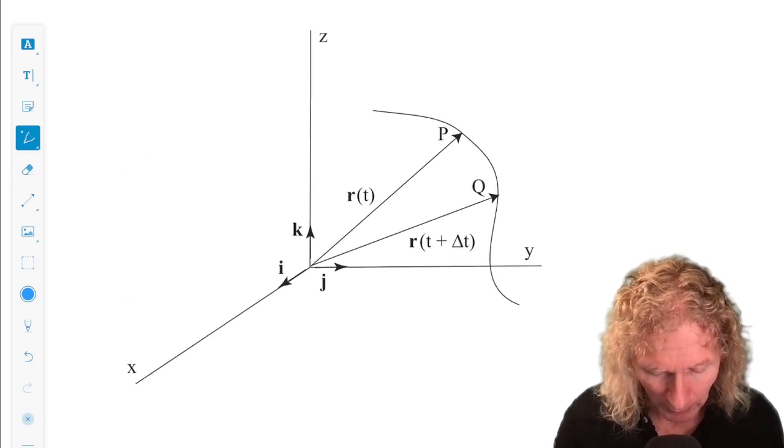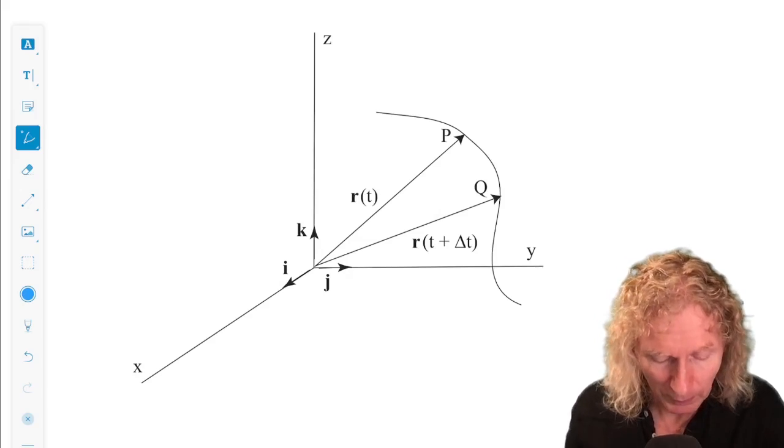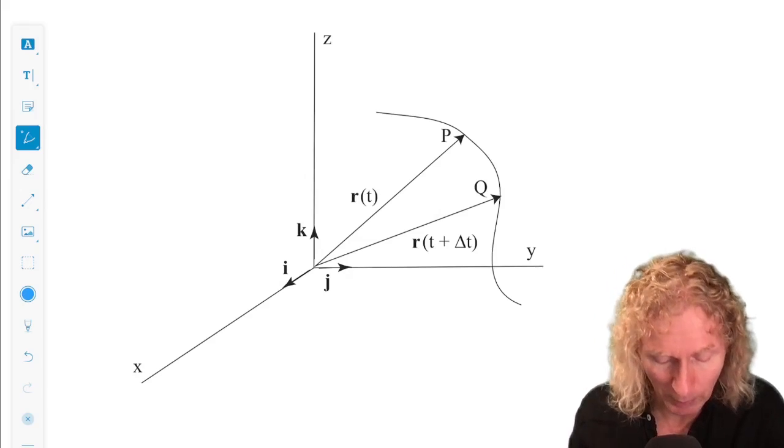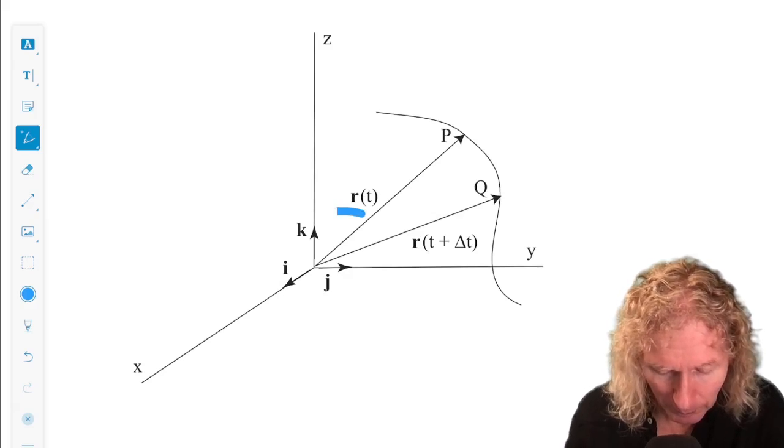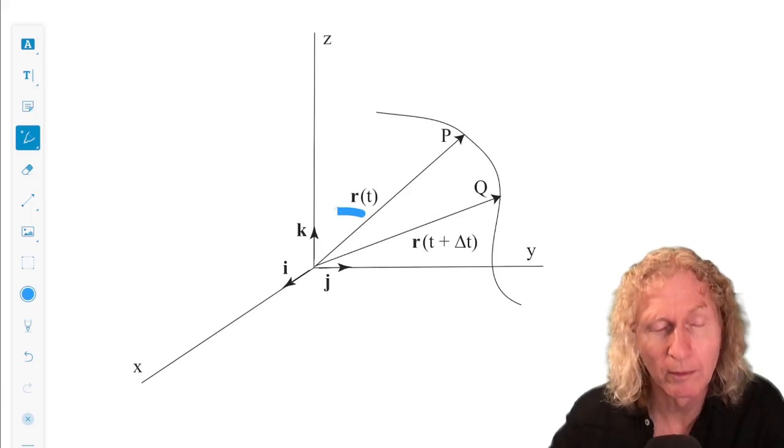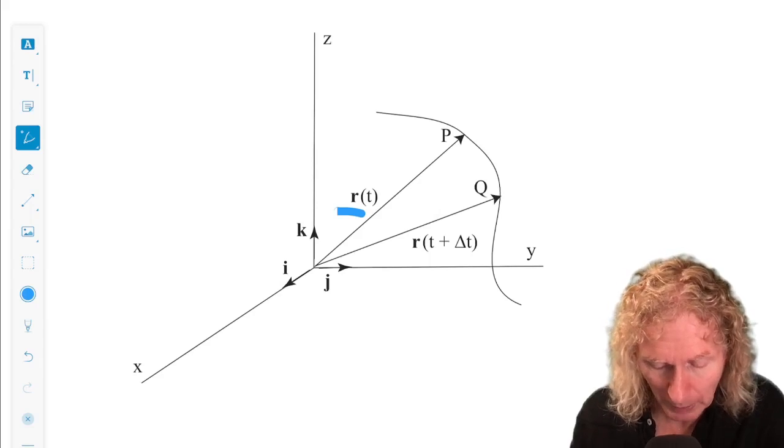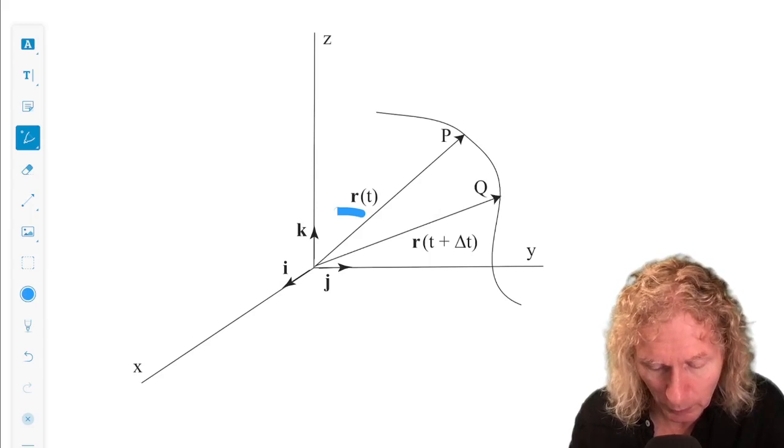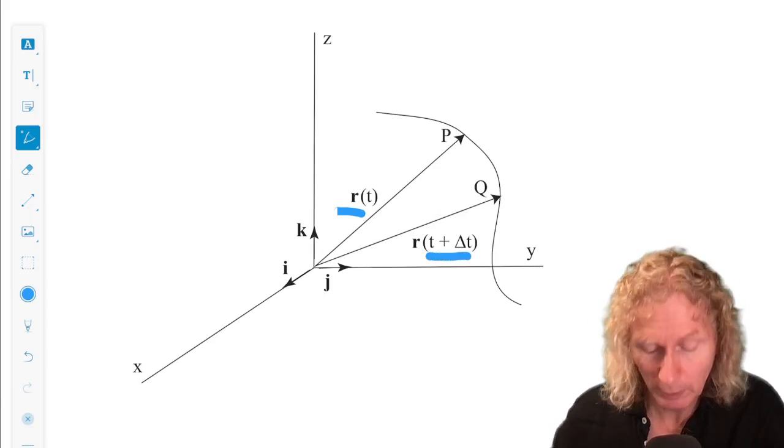Now we can draw a picture of this. So we have the x, y, z coordinates defined by the i, j, k directions. And we have the vector R of t. And the tip of the vector, say, at time t locates a point p. If we let t go to t plus delta t, the vector moves to a point q.